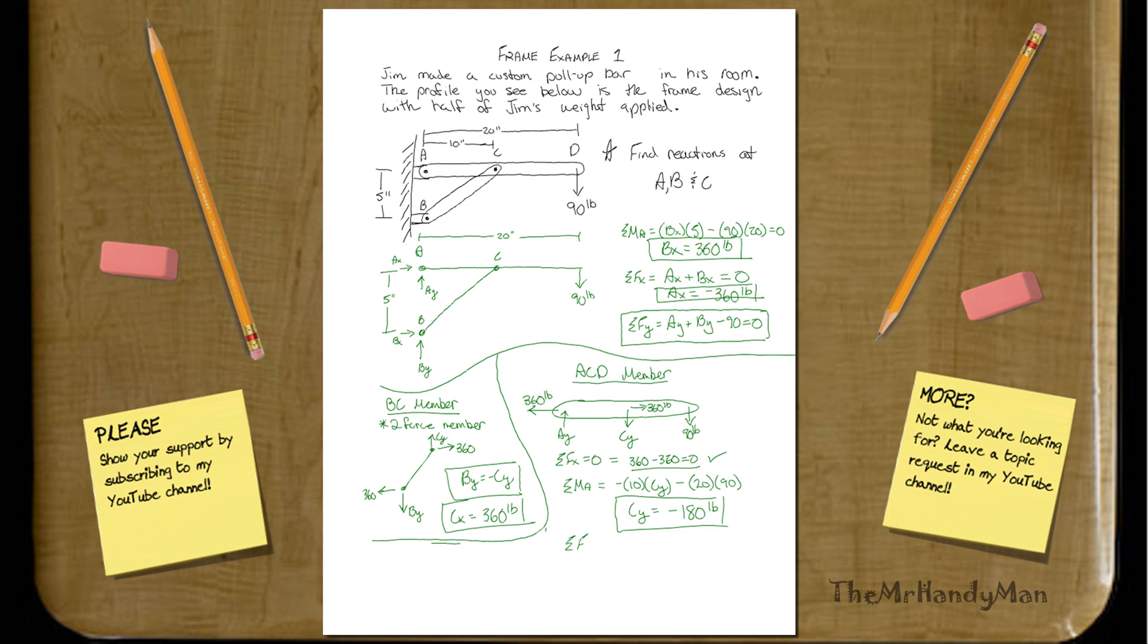Now we can go back to our sigma of F_Y. So this should also equal zero. And you can do A_Y. And what we would have done was minus C_Y minus 90. But since we know that C_Y is equal to negative 180,